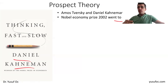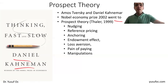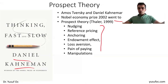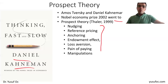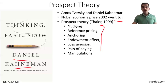In behavioral economics we have the famous book 'Thinking Fast and Slow' by Daniel Kahneman, who won the Nobel Prize in Economics in 2002 along with his late colleague Amos Tversky. Interestingly, they were both psychologists and psychology academics who ran hundreds of experiments to understand people's purchase behavior. From this work came concepts like nudging, reference pricing, anchoring, endowment effect, and loss aversion, which I will cover in future videos.